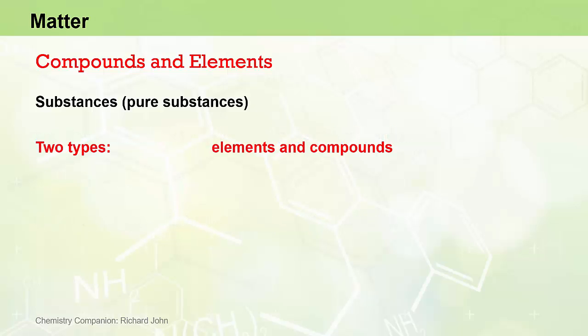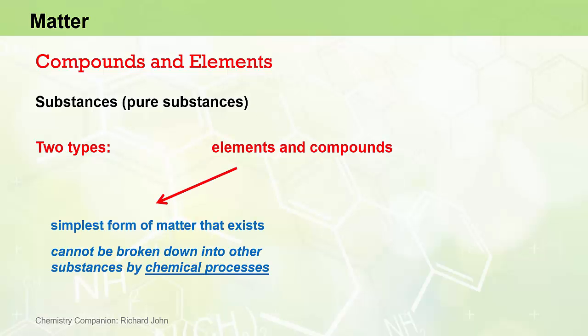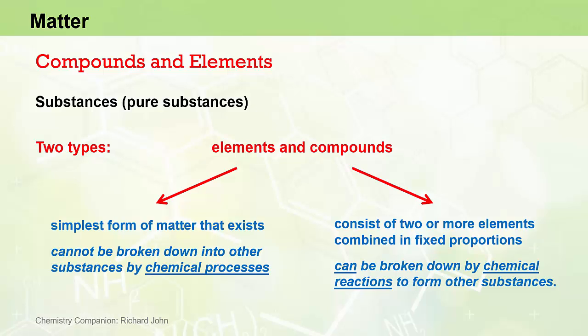As we noted earlier, there are two types of substances, elements and compounds. Elements are the simplest form of matter that exists and they cannot be broken down into other substances by physical or chemical means. Compounds consist of two or more elements combined in the same fixed proportions by mass, and while they cannot be broken down to their constituent components by physical processes, they can be broken down into their constituent elements by chemical processes or chemical reactions.